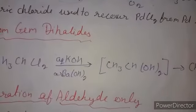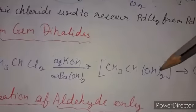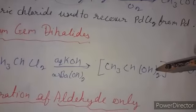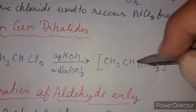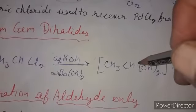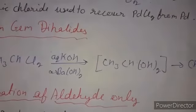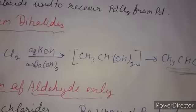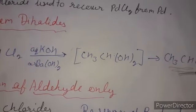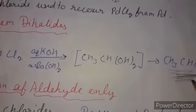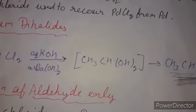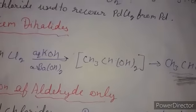The last method is preparation from gem-dihalides. We use 1,2-dichloroethane in the presence of aqueous KOH or barium hydroxide to obtain an unstable diol, because when two OH groups are attached to the same carbon it is unstable and easily converts to an aldehyde. If you have any doubts up to this topic, you can call or message me to clarify. Thank you.